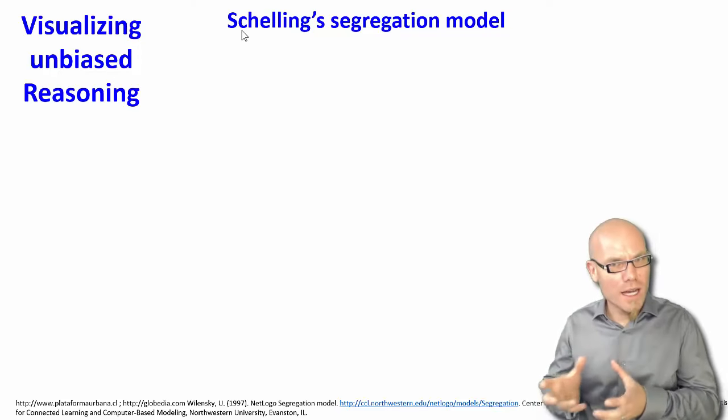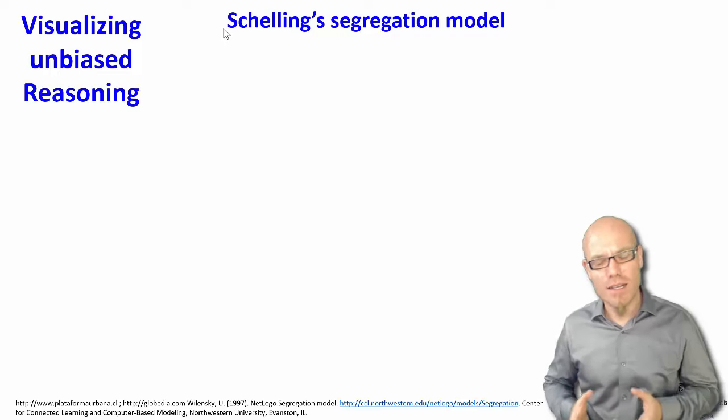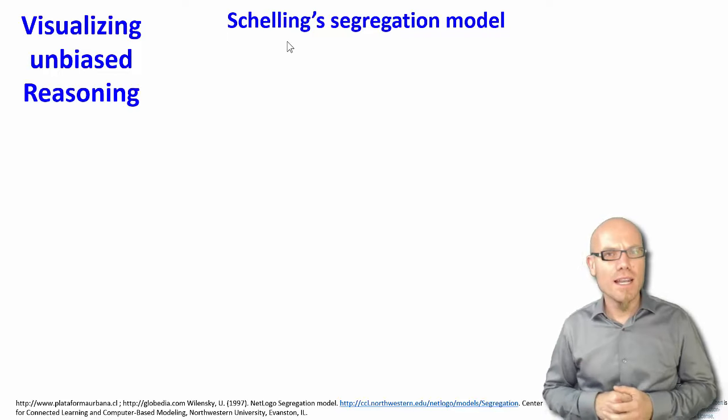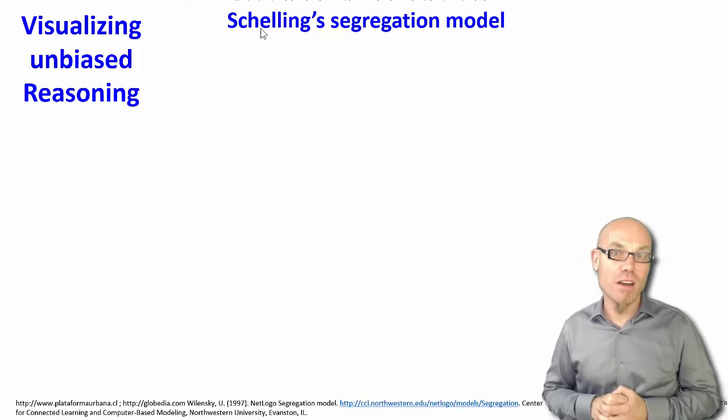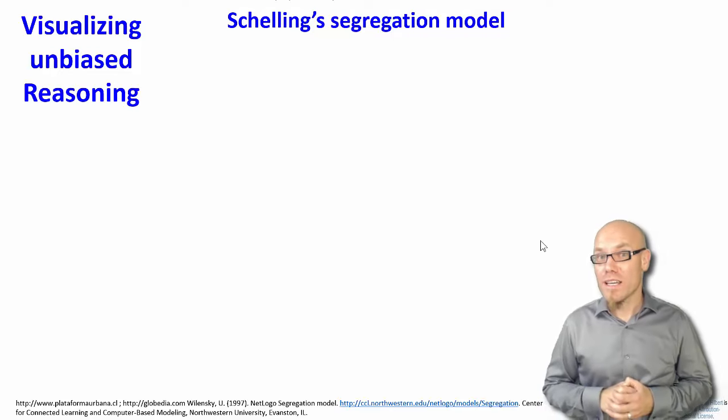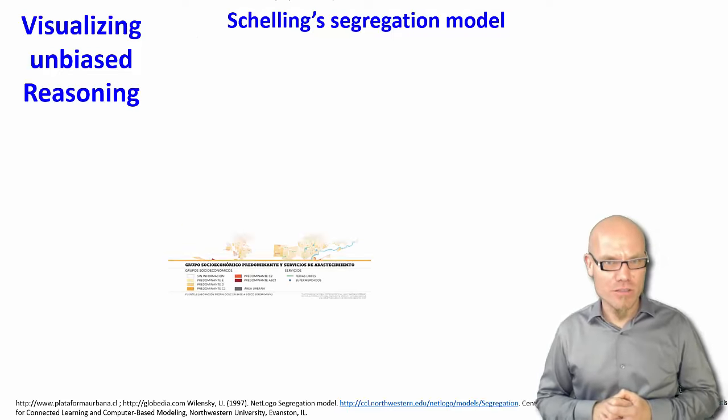Let's look at one very concrete example from one kind of computer simulation modeling approach called agent-based modeling. That's a bottom-up modeling approach. Let's look at one very famous model, a Nobel Prize winning model: Schelling's segregation model.